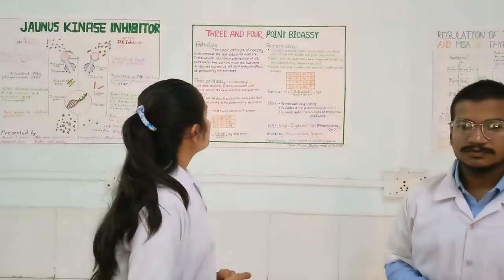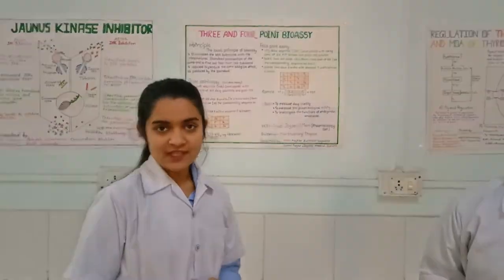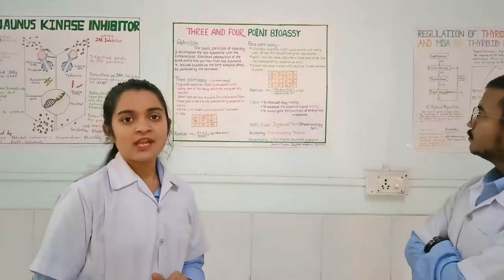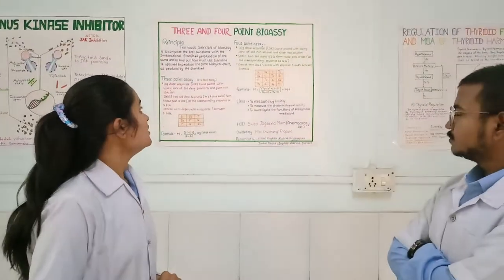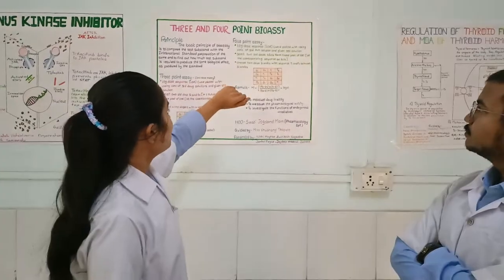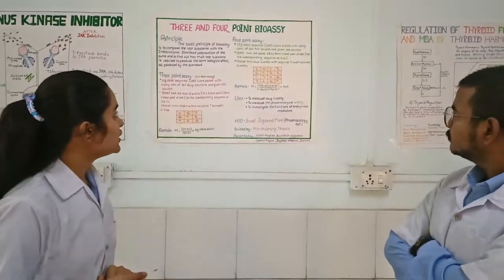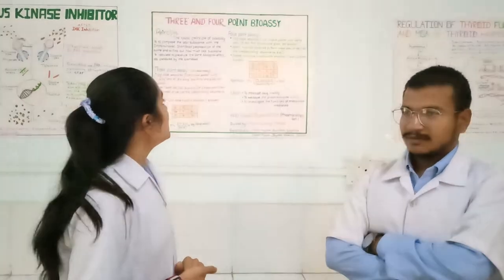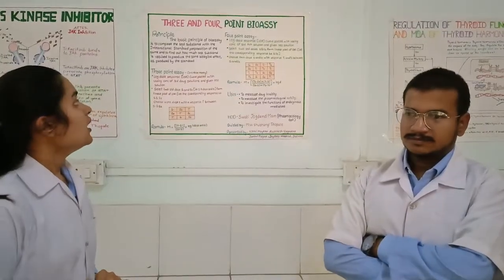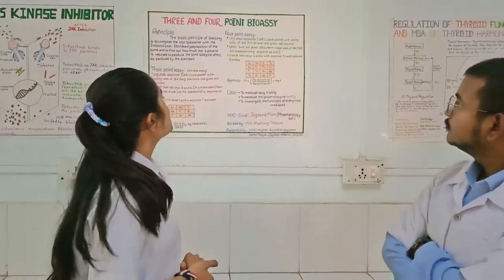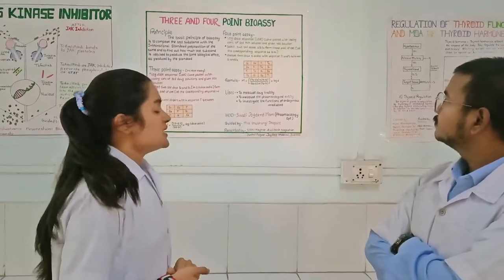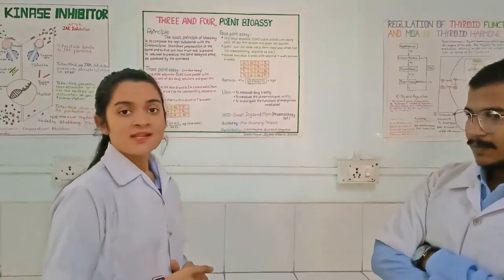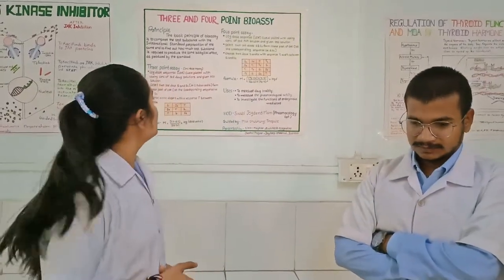Now the 4-point assay. In the 4-point assay we take 2 test solutions and 2 standard solutions. A log dose-response curve is plotted with varying concentrations of the acetylcholine solution and the given test solution. We select two standard doses S1 and S2 from the linear part of the DRC — DRC means drug response curve.